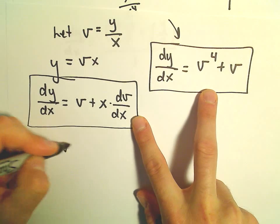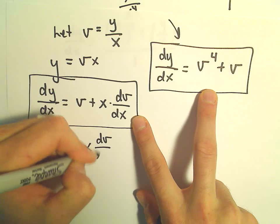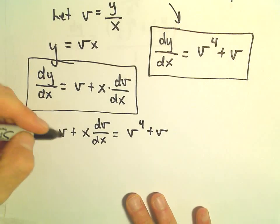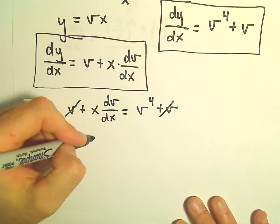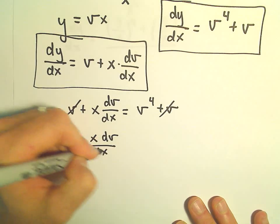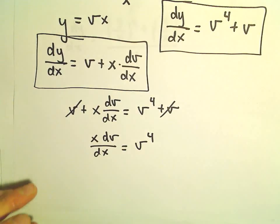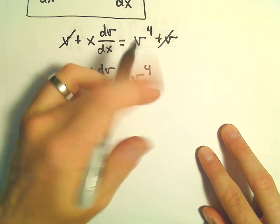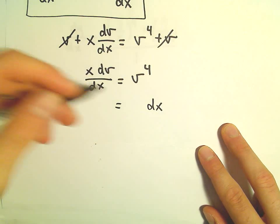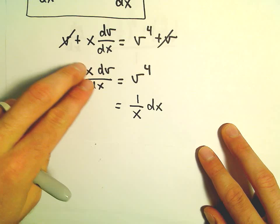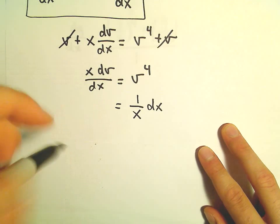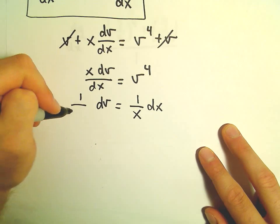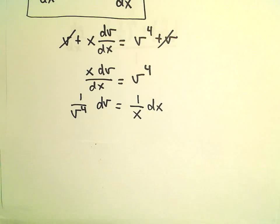Setting these equal: v plus x times dv over dx equals v to the fourth plus v. Subtracting v from both sides gives x times dv over dx equals v to the fourth. This is a separable differential equation. We multiply dx over, multiply both sides by 1 over x, and multiply by 1 over v to the fourth, giving us dv over v to the fourth equals dx over x.